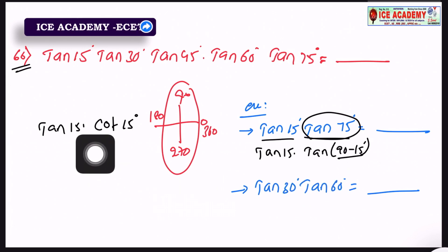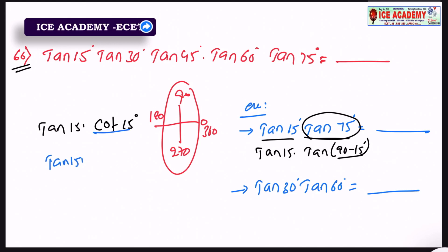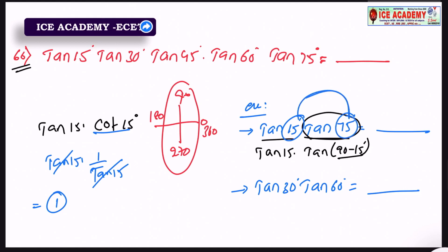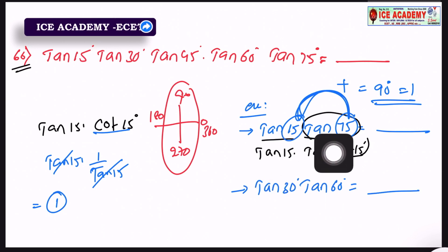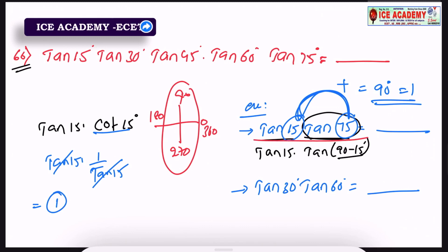Now we have to simplify: cot 15 degrees into 1 by tan 15. We cancel the two values. If we add the two values together to 90 degrees, we simplify the answer. If we add the value to 90 degrees, we cancel — and the answer is 1. That means the answer is 1. Clear?